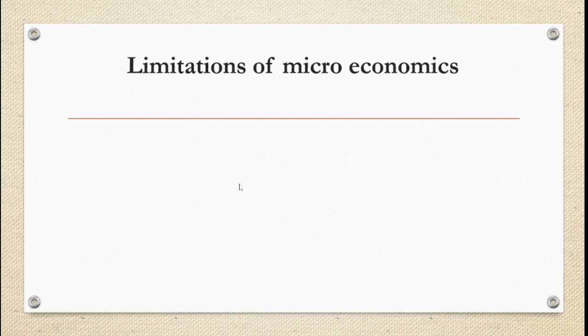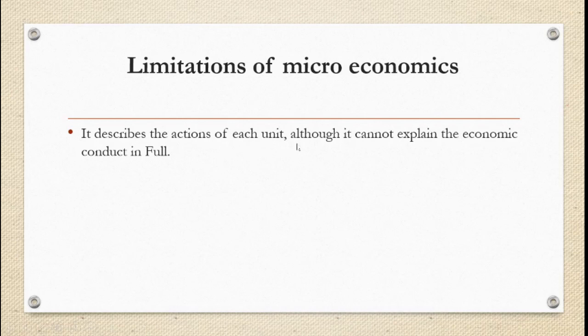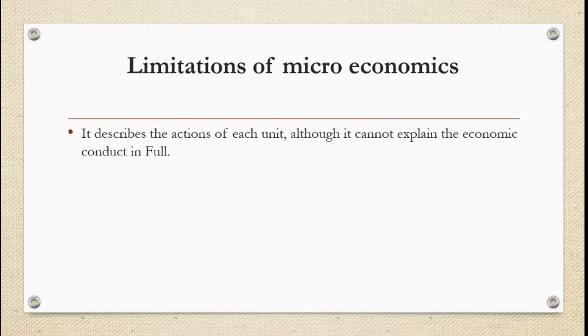Now we come to the limitations of microeconomics. Just as every coin has two sides, microeconomics also has limitations. The first limitation is that it describes the action of each unit but cannot explain the economic conduct in full. Microeconomics provides explanation for each individual unit, but how all these individuals together make the total economy function — that it cannot completely explain.